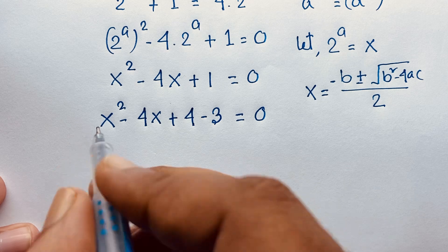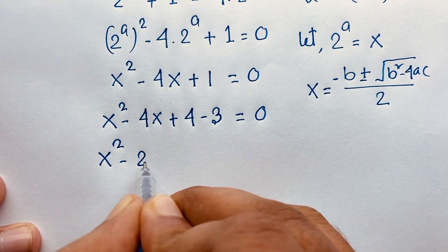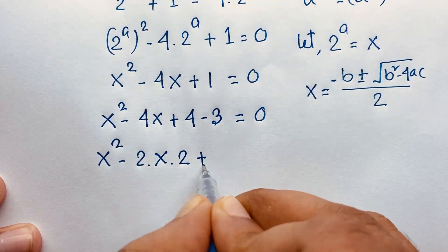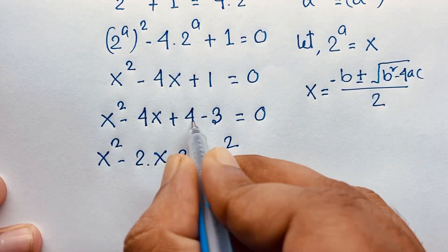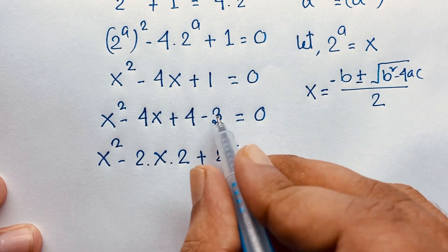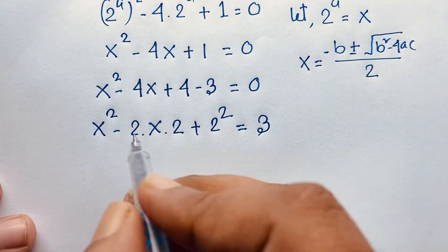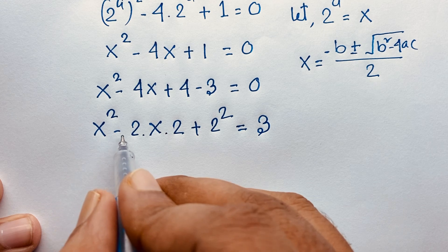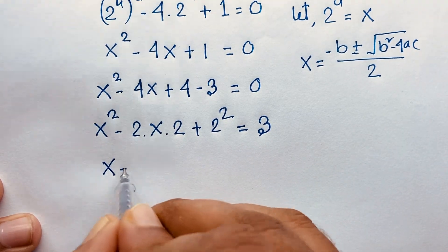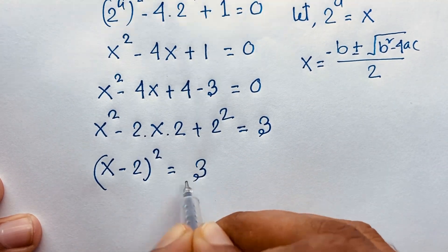We have x squared minus 2 times x times 2, plus 2 squared — which equals 4. Using the identity a squared minus 2ab plus b squared equals a minus b whole squared, this equals 3.